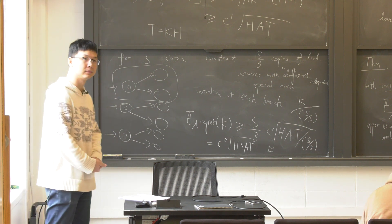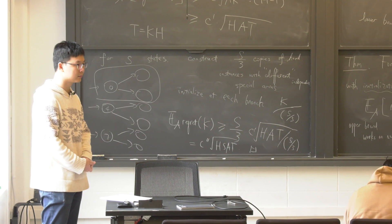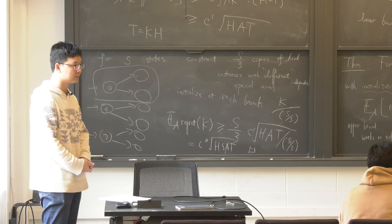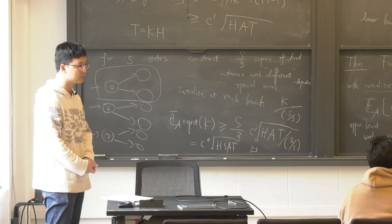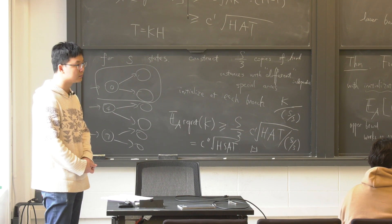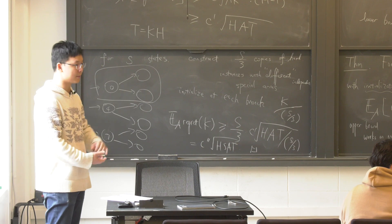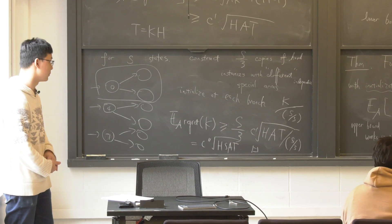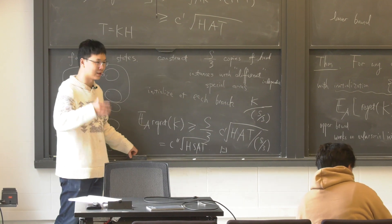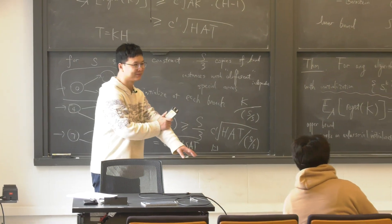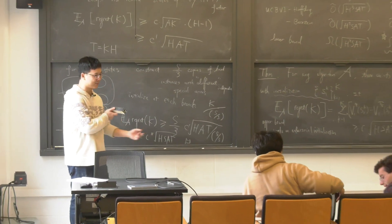A student asks: can we make a significantly harder problem with a higher regret lower bound? The answer is yes, and that's exactly the point — we know there's an upper bound, so the lower bound must match it. We'll see you next week. Happy spring break.